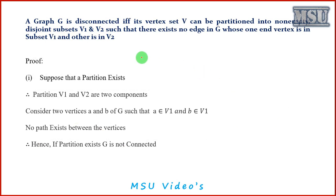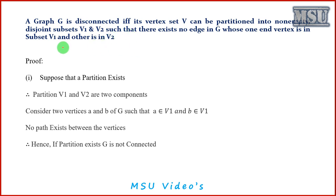A graph G is disconnected if its vertex set V can be partitioned into two non-empty disjoint subsets V1 and V2 such that there exists no edge in G whose one end vertex is in V1 and the other is in V2. What we are going to prove is that a graph is disconnected if and only if it can be partitioned into two disjoint subsets V1 and V2, with no edge between them.